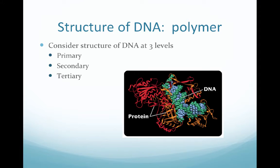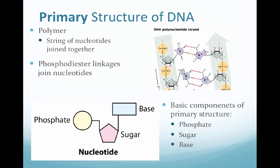DNA is a polymer, which means that it is a structure that has various characteristics. More specifically, it's going to have a structure at three different levels: primary, secondary, and tertiary. The primary structure of DNA is what you're probably most familiar with. This polymer is going to link nucleotides together via phosphodiester linkages, so the nucleotide material is going to be bonded through those phosphodiester linkages.